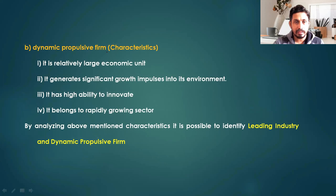The dynamic propulsive firm concept was first put forward by Schumpeter, and Perroux borrowed this idea to interpret the initial point in the formation of the Growth Pole. The characteristics to identify a dynamic propulsive firm are: it is a relatively large economic unit that generates significant growth impulses into its environment, it has a high ability to innovate, and it belongs to a rapidly growing sector. Once this propulsive firm is large, dynamic, and able to innovate, it becomes a dynamic propulsive firm, and later converts into a Growth Pole. By analyzing these characteristics, we are able to identify the leading industry and dynamic propulsive firm in a region, which will ultimately become a Growth Pole.